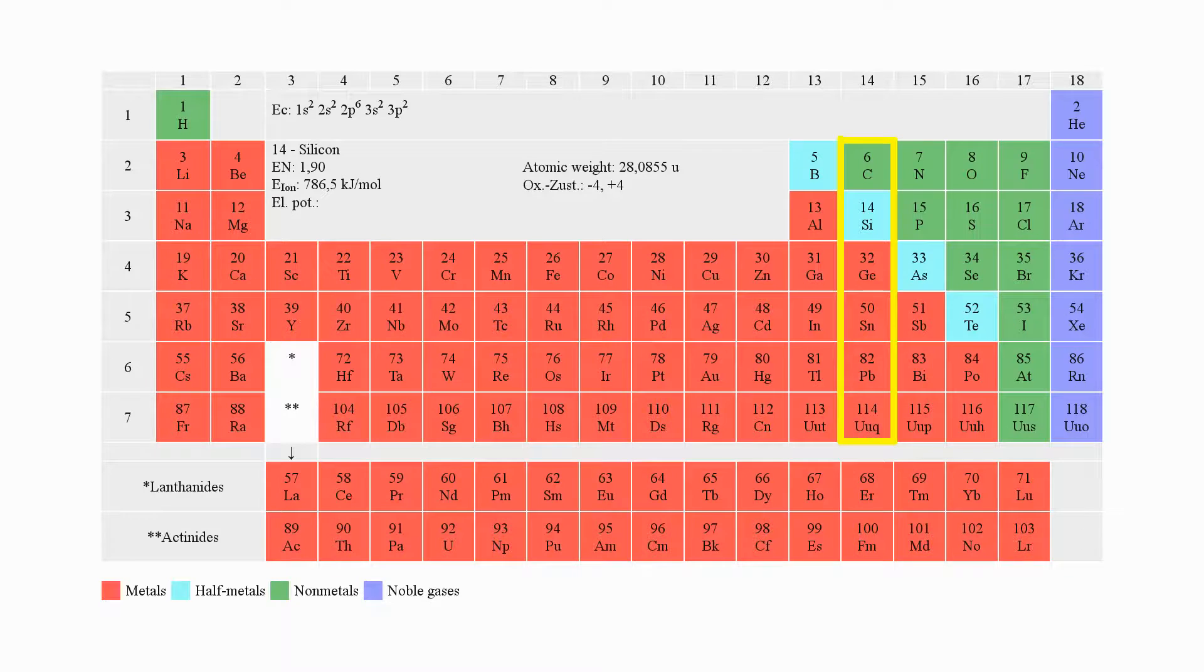The chemical element silicon is placed at the 14th group of the periodic system along with carbon, germanium, tin, lead, and the radioactive element ununquadium.